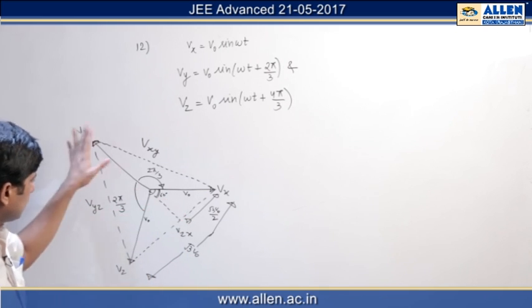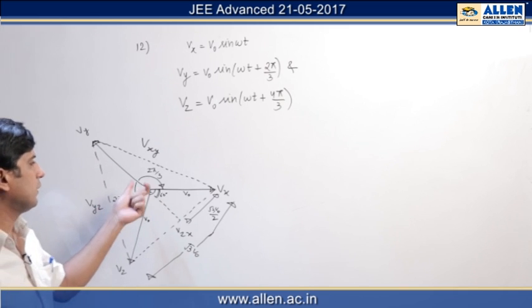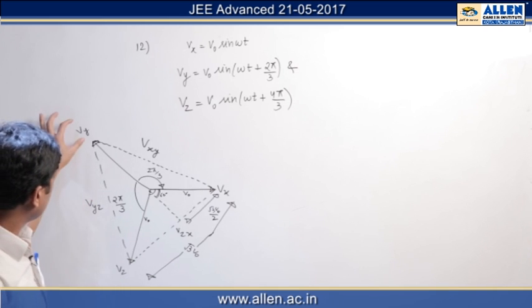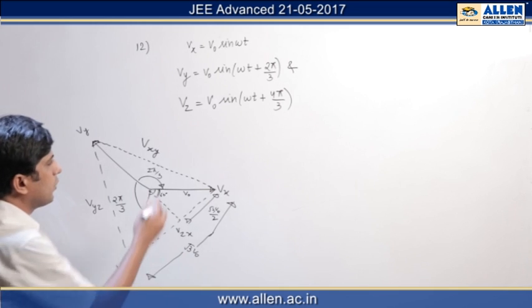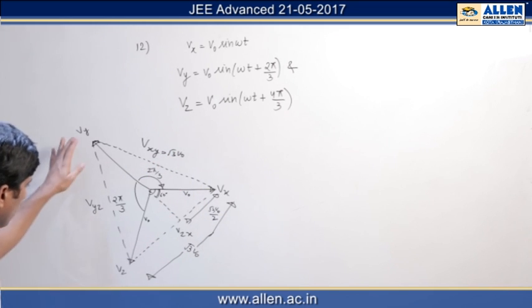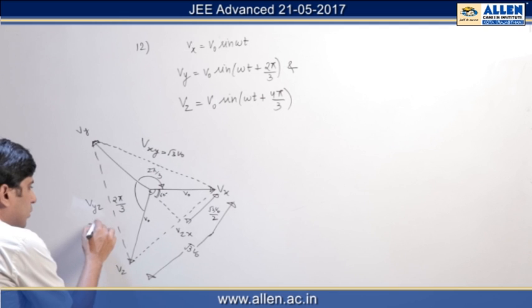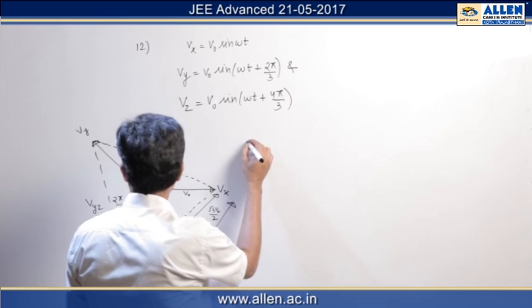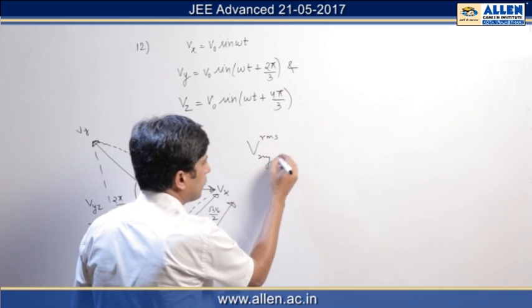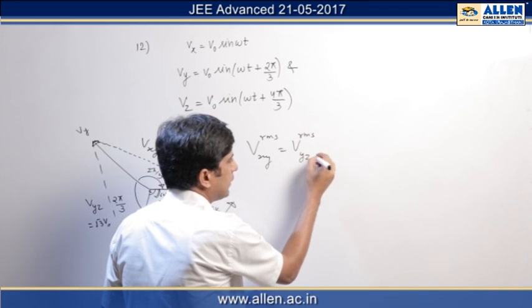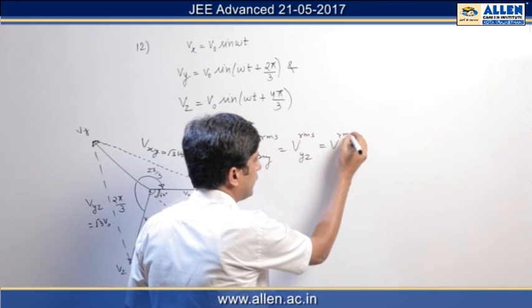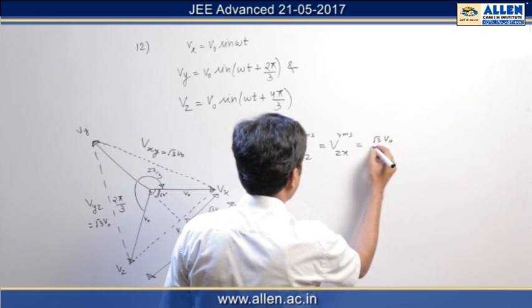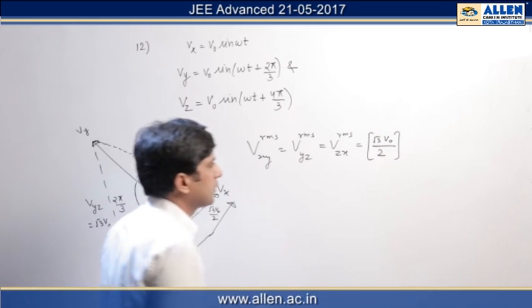Since the diagram is symmetric, each vector is making the same angle with other vectors. Therefore, it is clear that difference of vy and vx will also be root 3 v0, and difference between y and z will also be root 3 v0. This is the maximum value of difference. That means rms value of difference vrms between xy, vrms between yz, and vrms between zx will be the same and it will be equal to root 3 v0 by 2, that is half of the maximum value.